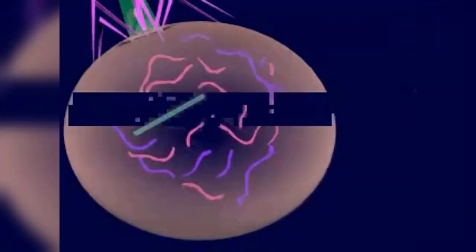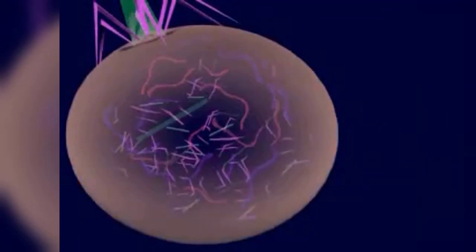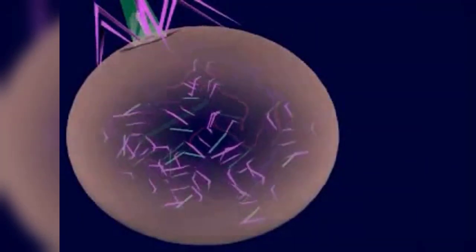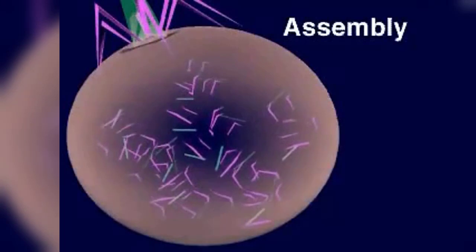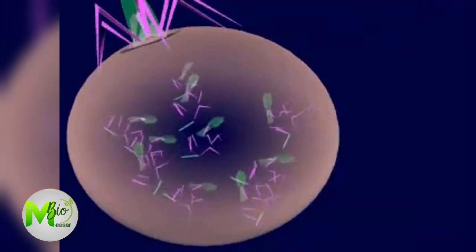By using the raw materials present in the cell, the viral DNA directs the production of new virus parts. The newly produced viral components are assembled into complete new virus particles.